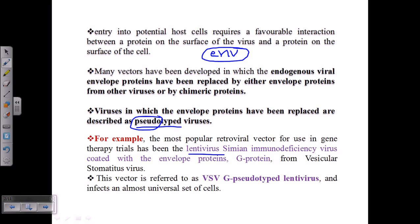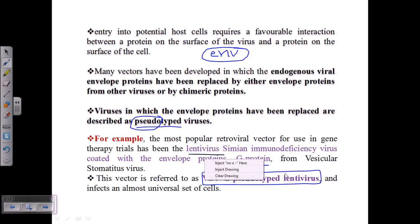An example is the lentiviral simian immunodeficiency virus coated with an envelope protein from a different source. For this lentiviral vector, the envelope gene is not from lentivirus itself; instead, it comes from vesicular stomatitis virus — specifically the G protein. The fusion of this VSV G region onto the lentiviral vector creates a new type of vector called VSV-G pseudotyped lentivirus. Normally, lentivirus env genes are toxic and pathogenic, but the VSV G protein allows proper host cell attachment while being less pathogenic.